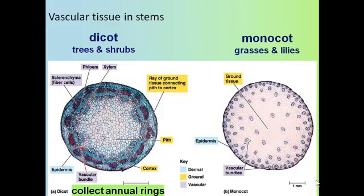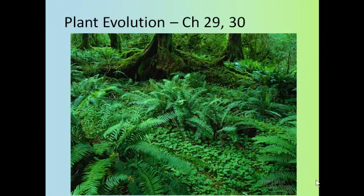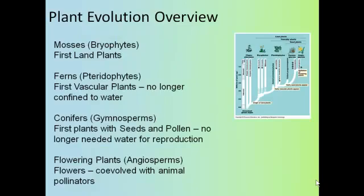Now for a brief discussion of plant evolution. The first land plants were the mosses or bryophytes, and these had to rely on diffusion to get the nutrients and moisture they needed because they didn't have any vascular tissue — no plumbing. Next came the ferns or tracheophytes, the first vascular plants. This was an important evolutionary step because it allowed ferns to inhabit locales that were drier and weren't necessarily moist on the surface.